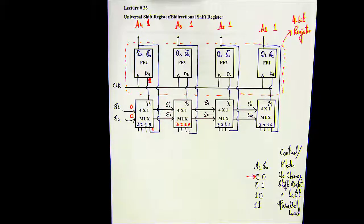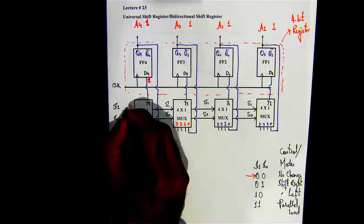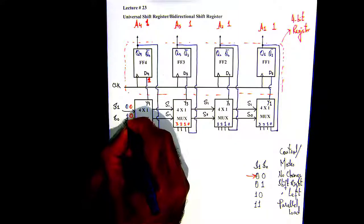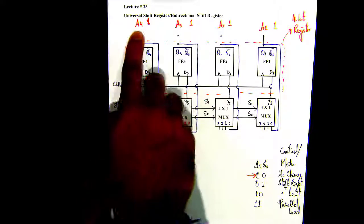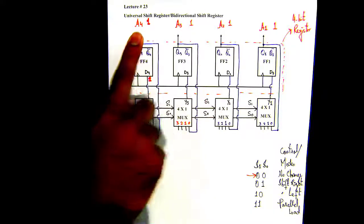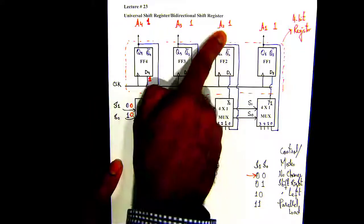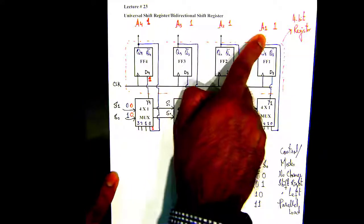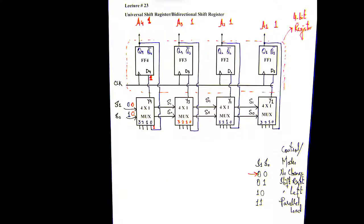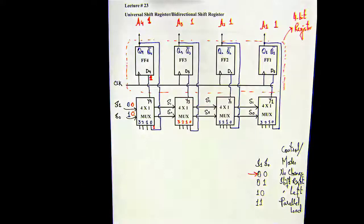Now everybody understands the first mode control of the shift register, basically no change the way we have wired up. Now we're going to have to do wiring for the second mode control when S1 and S0 are zero one. So S1 is zero, S0 is one, which means A4 needs to switch to A3, A3 needs to switch to A2, and A2 needs to switch to A1, and at A4 we will have a new output, correct.